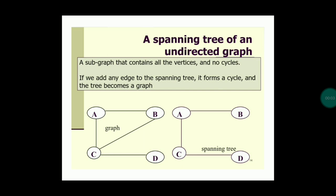A spanning tree of an undirected graph is a subgraph that contains all vertices and no cycles. If we add any edge to the spanning tree, it forms a cycle and the tree becomes a graph. In the first example, connecting a-c and b forms a cycle, making it a graph. In the second example, vertices b, a, c, d form a straight line with no cycle — that is a spanning tree.